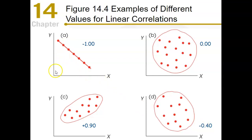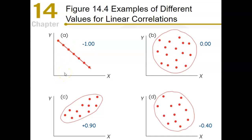Going back to diagram A — as X moves one unit, Y moves exactly one unit in the opposite direction. That's what makes it a perfect linear relationship: they're changing by the same amount. The Y is moving in the opposite direction, which is why we get the negative sign, but their variability is equal. That's what we mean by the consistency of the relationship.